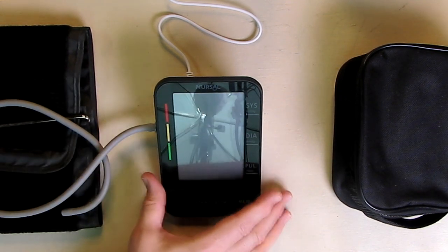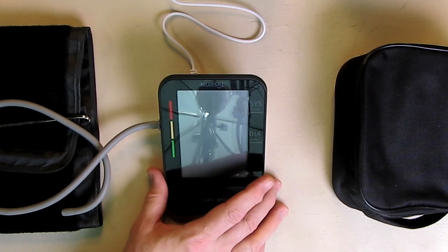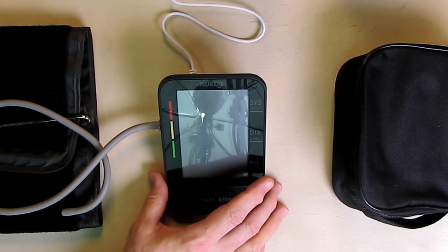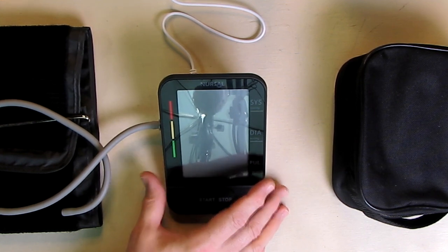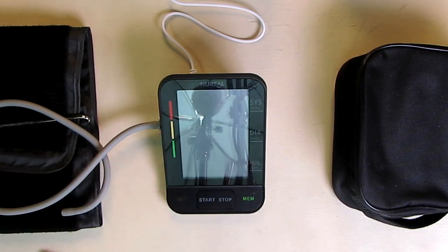You just relax as much as possible. You want to sit for about five minutes before you take your measurement. It's just a good thing to do to relax you. You want to avoid measurements early in the morning because that's when your body has the highest blood pressure.